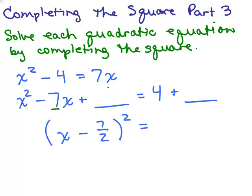7 halves squared is 49 fourths, 7 halves times 7 halves. You should convince yourself that if you did x minus 7 halves times x minus 7 halves, you really do get x squared minus 7x plus 49 fourths by using the FOIL method or the formula for squaring a binomial.